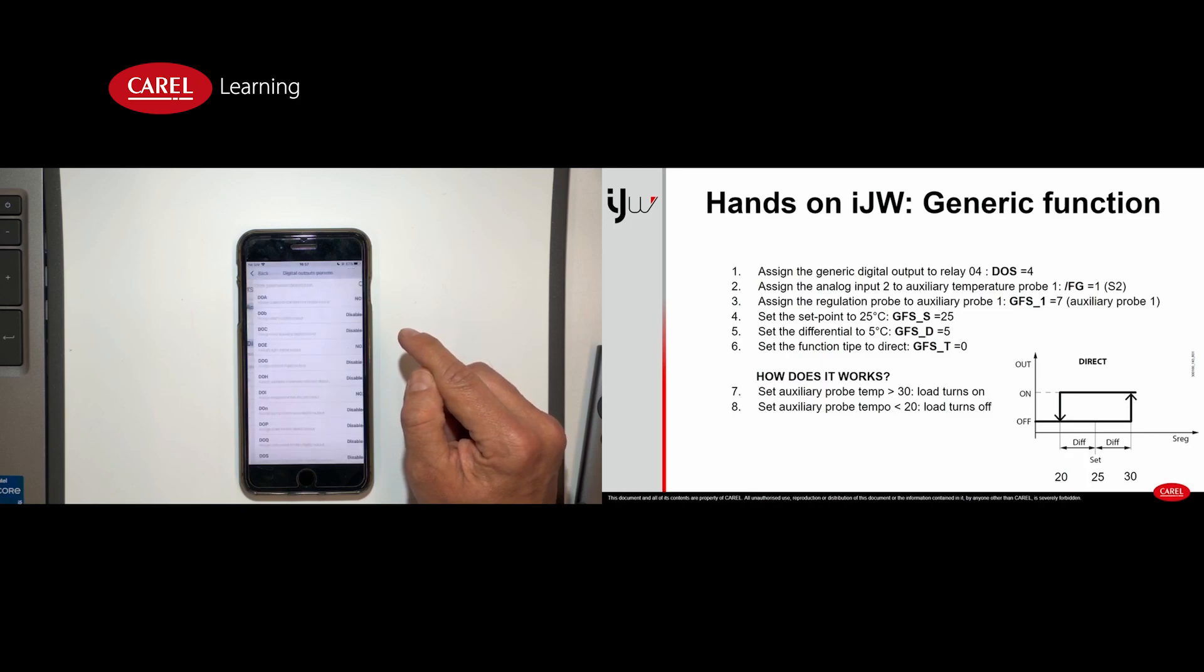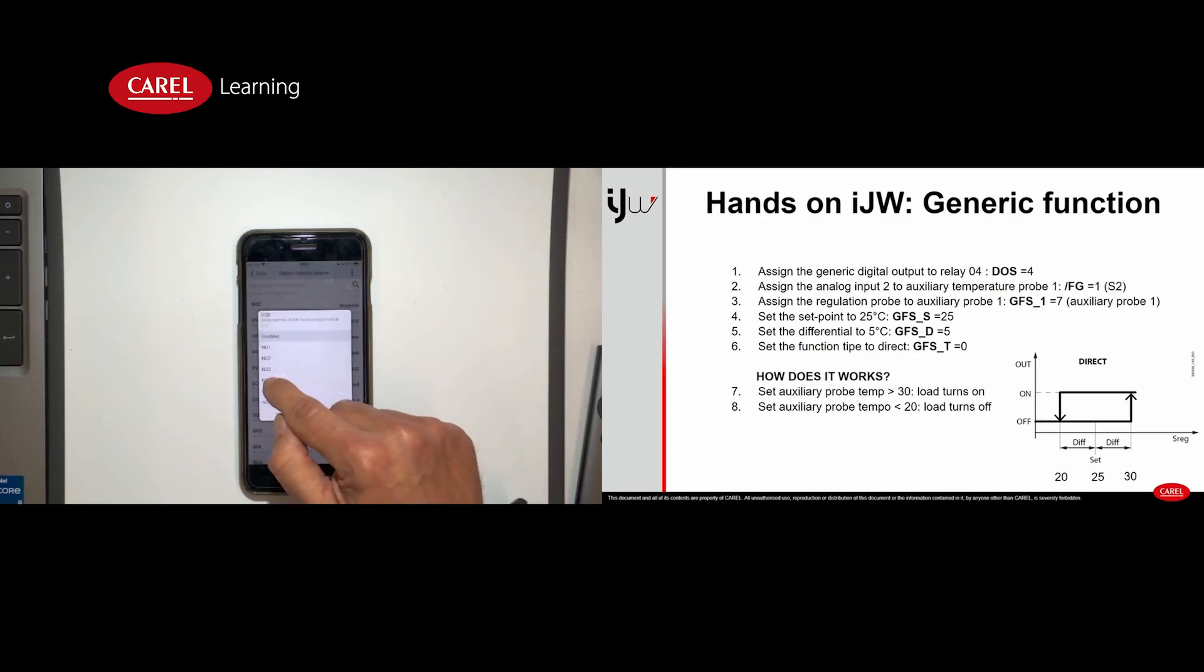So we select the function. The function is D-O-S assign generic on-off function and we choose the relay number 4.